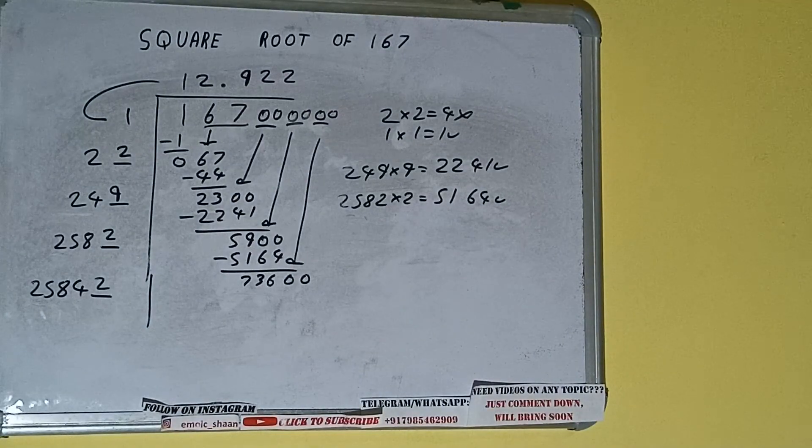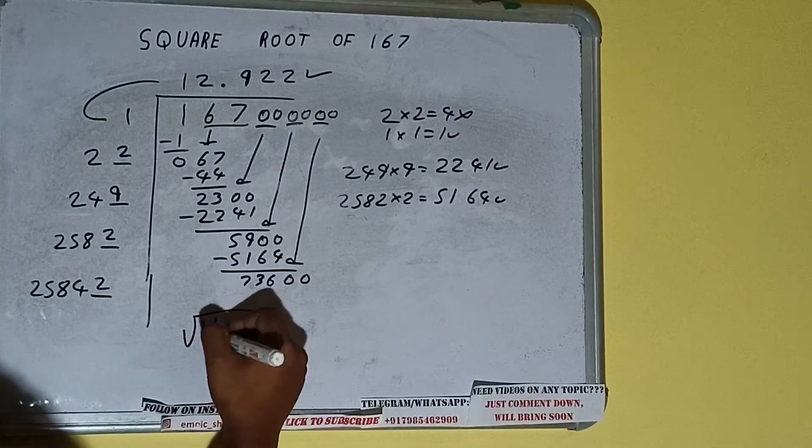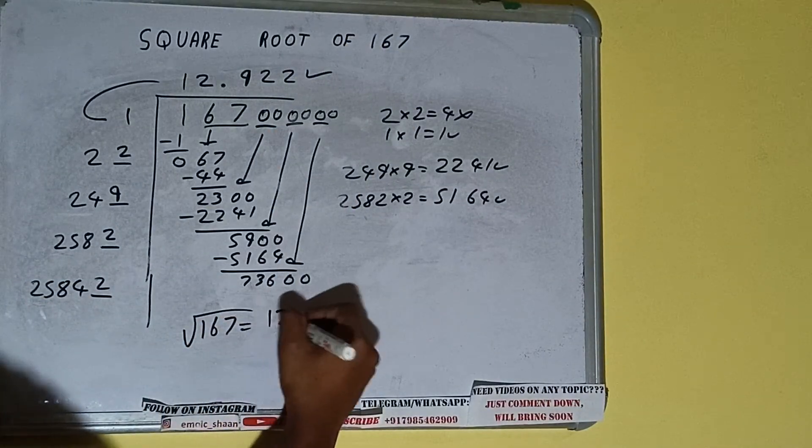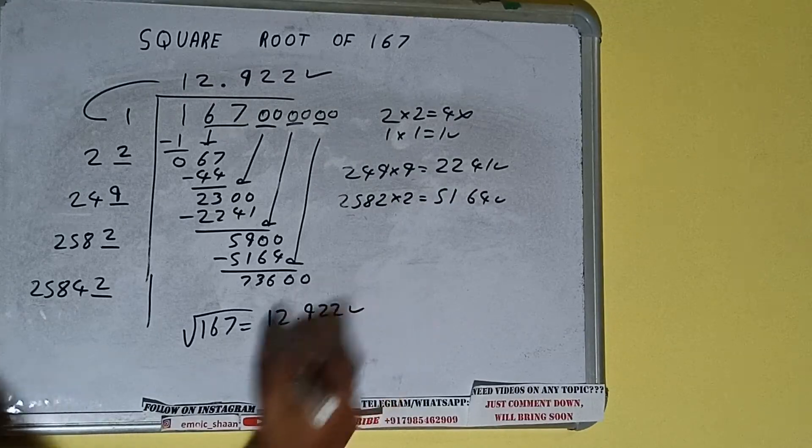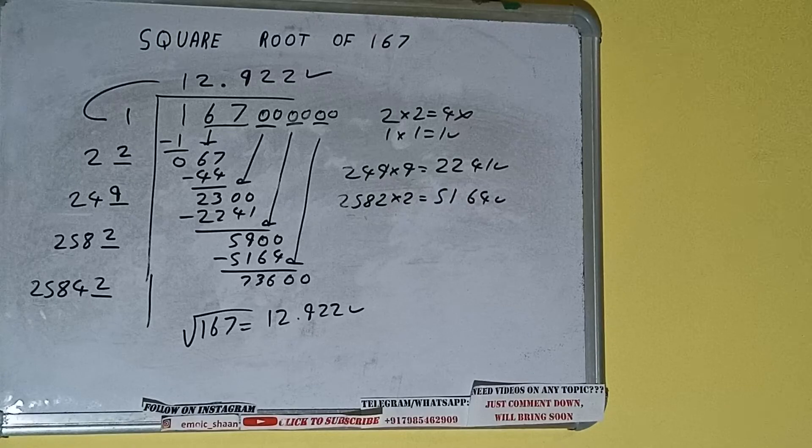But we don't need to calculate because we got the answer correct up to 3 decimal places. So square root of 167 will be 12.922. That will be the answer. So this is all about square root of 167.